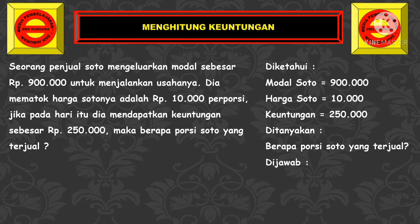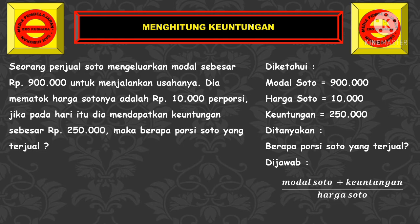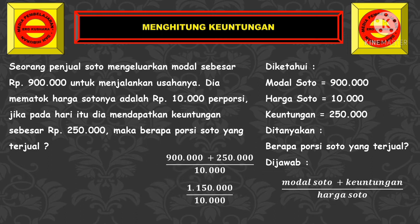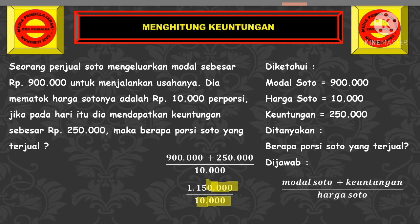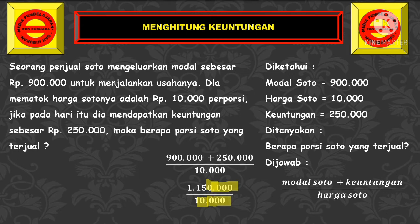Mari kita jawab bersama-sama dengan menggunakan rumus: modal soto ditambah keuntungan, dibagi harga soto. Modal sotonya 900 ribu rupiah ditambah keuntungan 250 ribu rupiah, dibagi harga sotonya 10 ribu rupiah. Hasilnya 1 juta 150 ribu dibagi 10 ribu. Kita coret nolnya — di atas ada empat, di bawah juga ada empat. Jadi hasilnya adalah 115 dibagi 1, sama dengan 115 porsi.